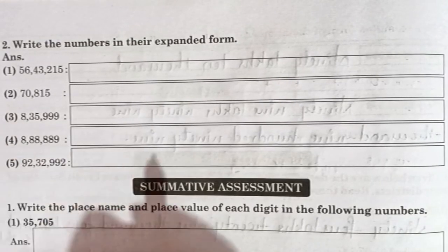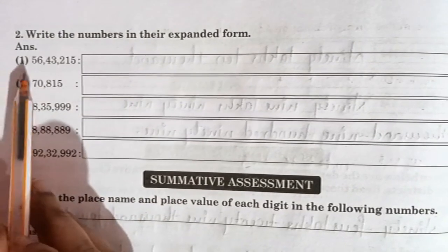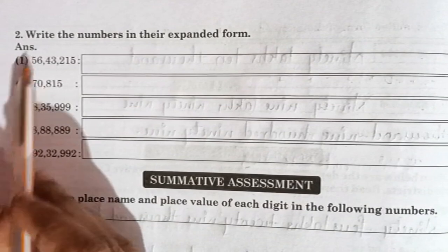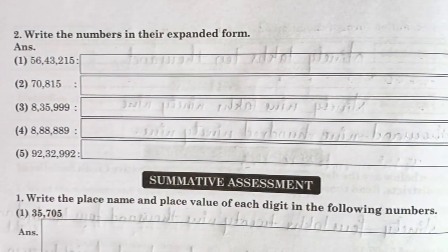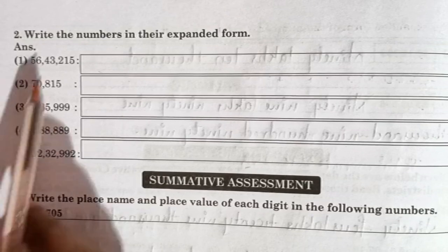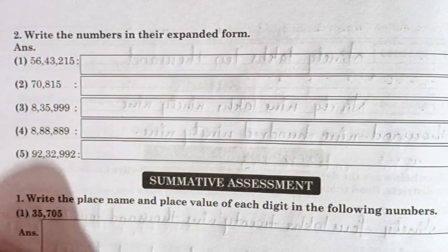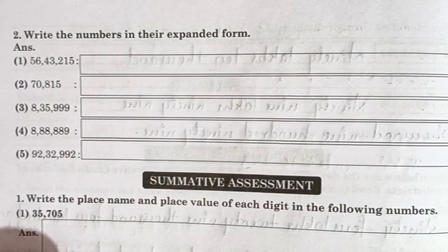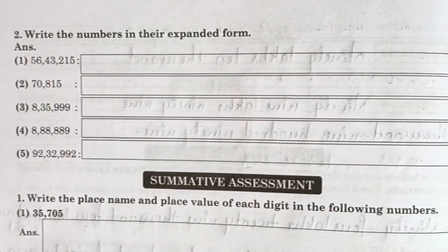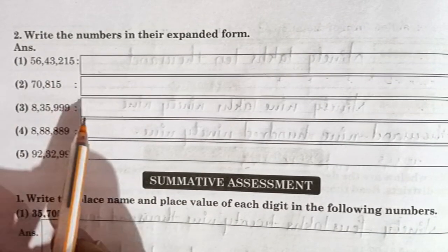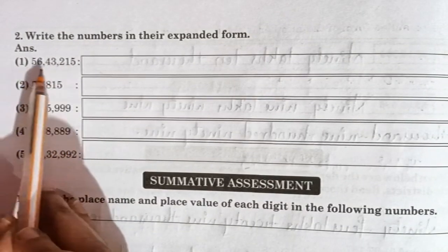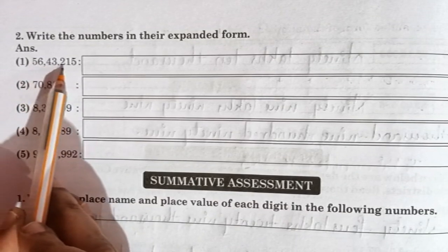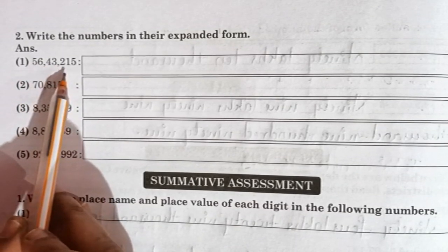Now students you are on page number 58, question number 2: write the numbers in the expanded form. You are supposed to expand the number which is given. Now let us see how to expand it. The first number is 56,43,215.